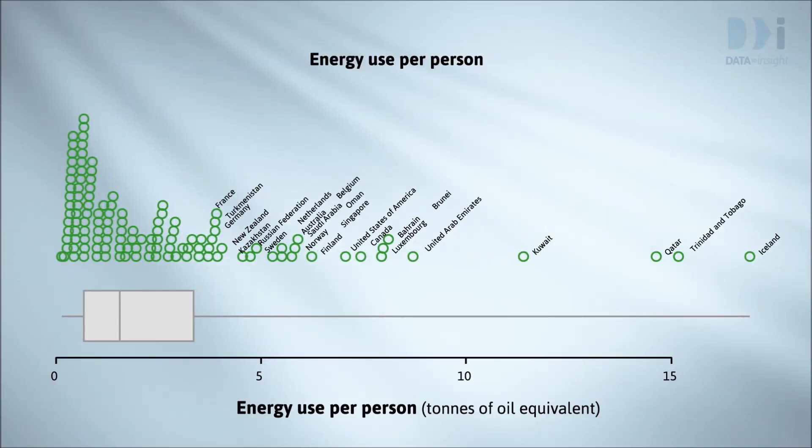This is a dot plot of average energy use per person, again with the top 25 countries identified. Some of the countries at the top are the same, others are different, so our new question is: how well does energy use predict CO2 emissions?